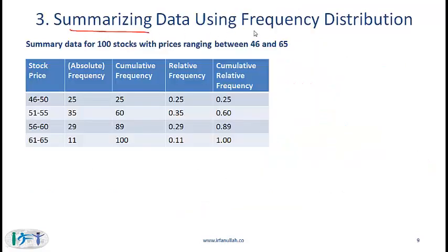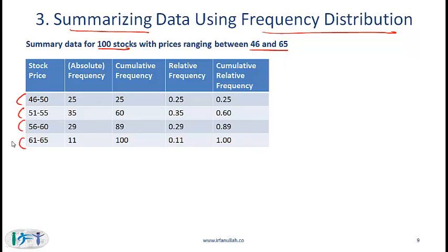Summarizing data using frequency distribution: let's say we have summary data for 100 stocks with prices ranging between 46 and 65, and we want to organize and categorize this data. We divide the stock price into 4 intervals of 5 each and figure out how many stocks fall within each interval. For example, 25 stocks fall in the 46 to 50 interval, 35 in the 51 to 55 interval, and so on. This number is called the absolute frequency.